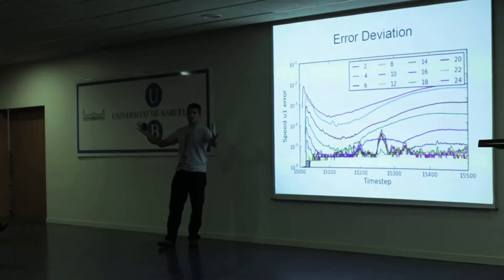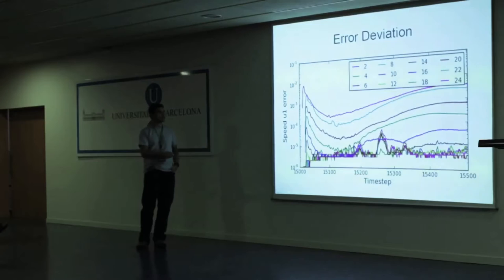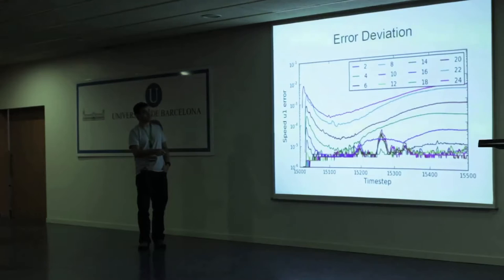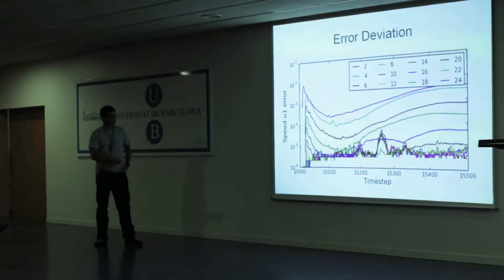What happens is that the error deviation kind of bounces off the walls of the system, comes back, and then increments on itself - a wave effect where the deviation increases again, then stabilizes and continues at the same level. This is for bit 24. We see similar behavior for bits 22, 20, 18, 16, and so on.